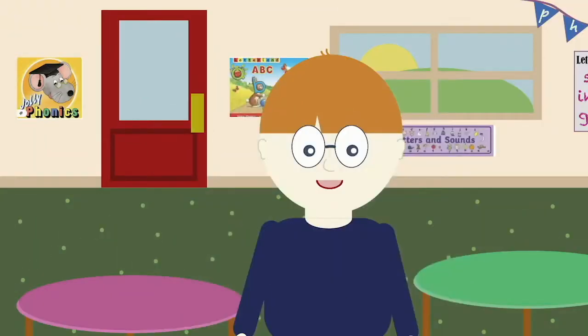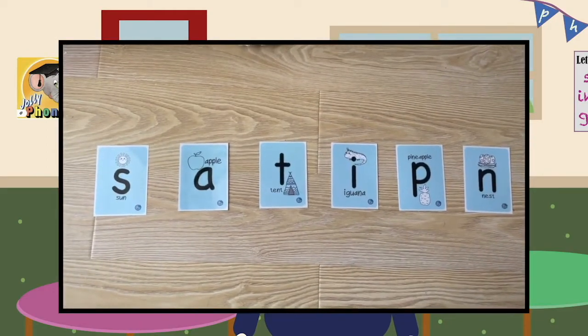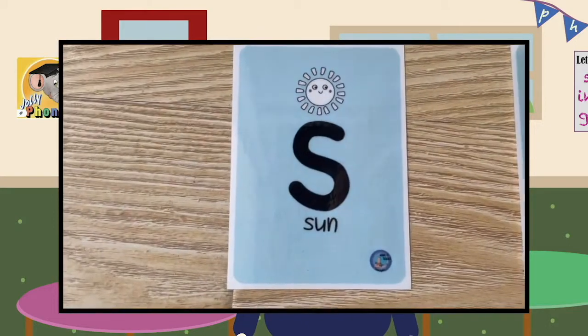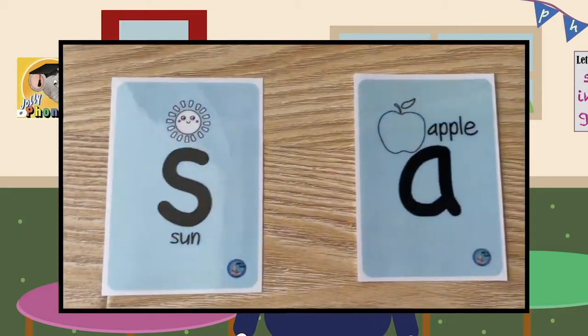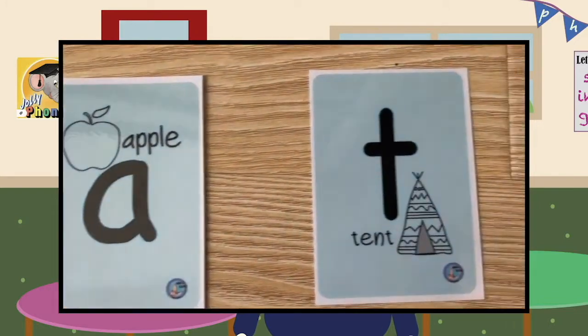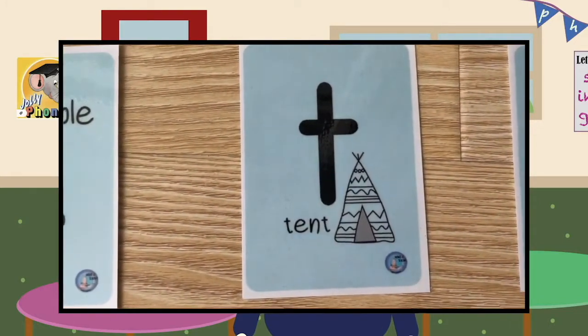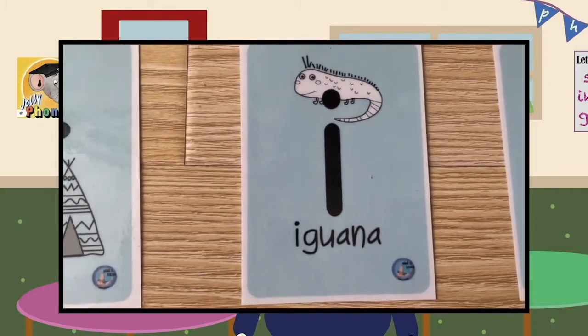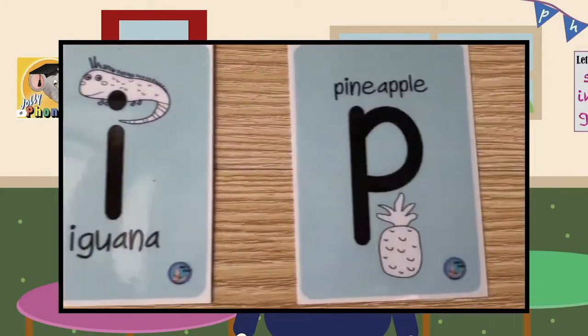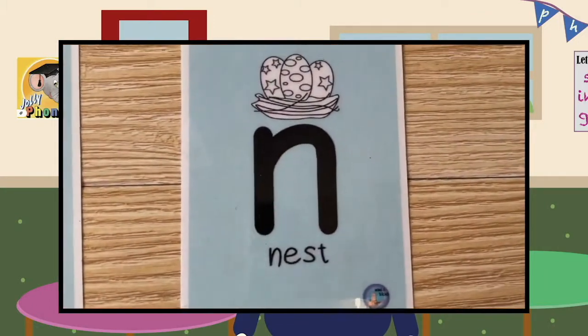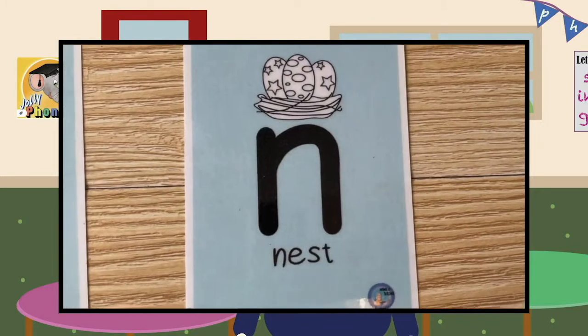Here are the first six sounds for you to learn. S as in sun. A as in apple. T as in tent. I as in iguana. P as in pineapple. N as in nest.